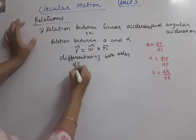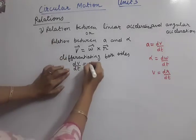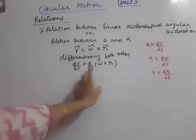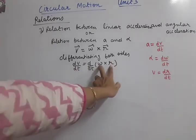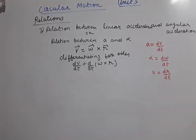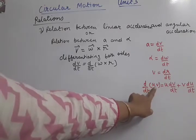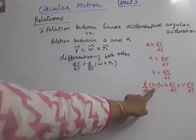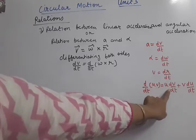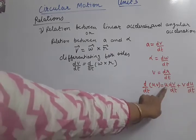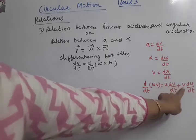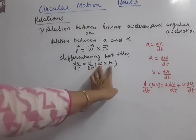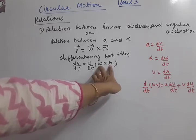Differentiating with respect to time: the left side becomes dv/dt, and the right side becomes d/dt of (ω × r). Now here we have a product of two quantities, so we apply the product differentiation formula. The formula is: for a product u × v, d/dt = u constant times dv/dt plus v constant times du/dt. We apply this to ω × r.